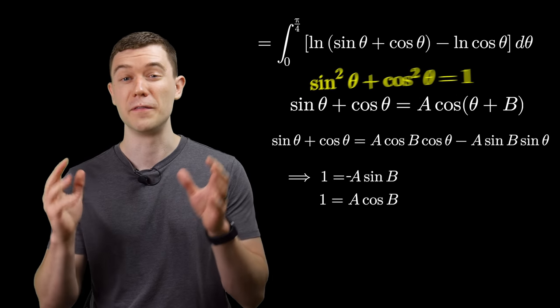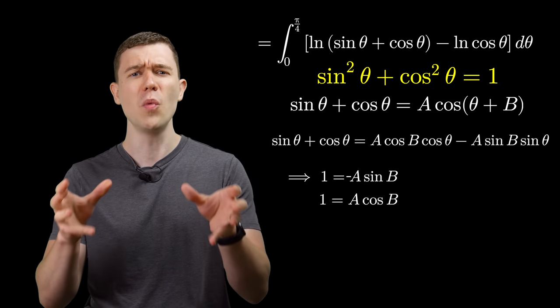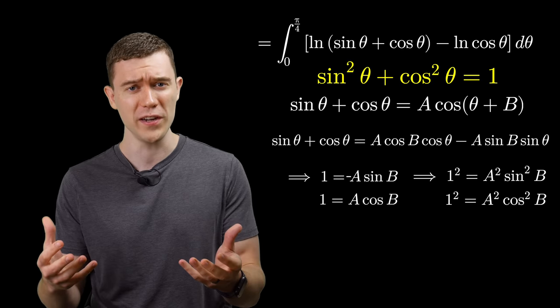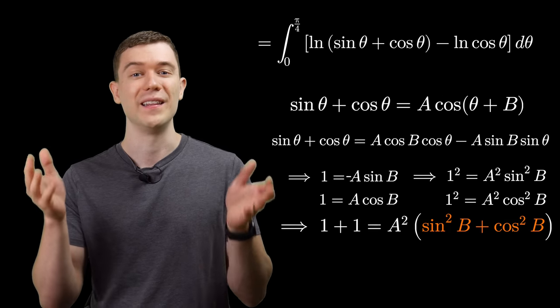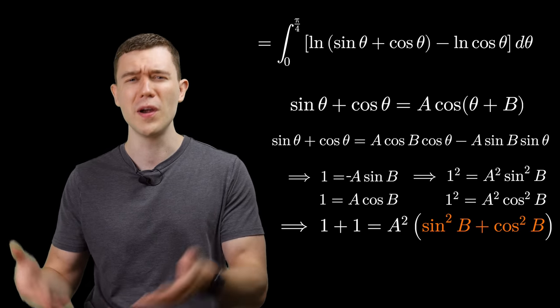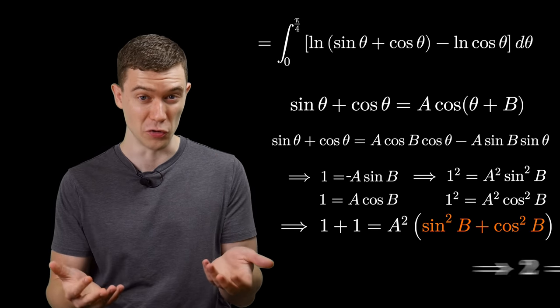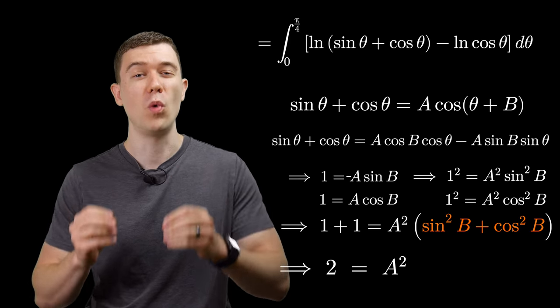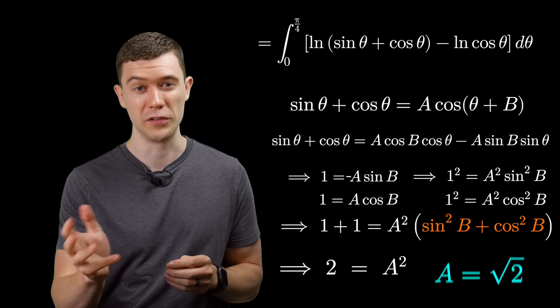Now we can take advantage of the fundamental trig identity, square both sides of both these equations, and add them up. Then we can factor out the constant, sine squared plus cosine squared, that's 1. 1 plus 1 is 2. This lets us solve for one of our constants as square root of 2.